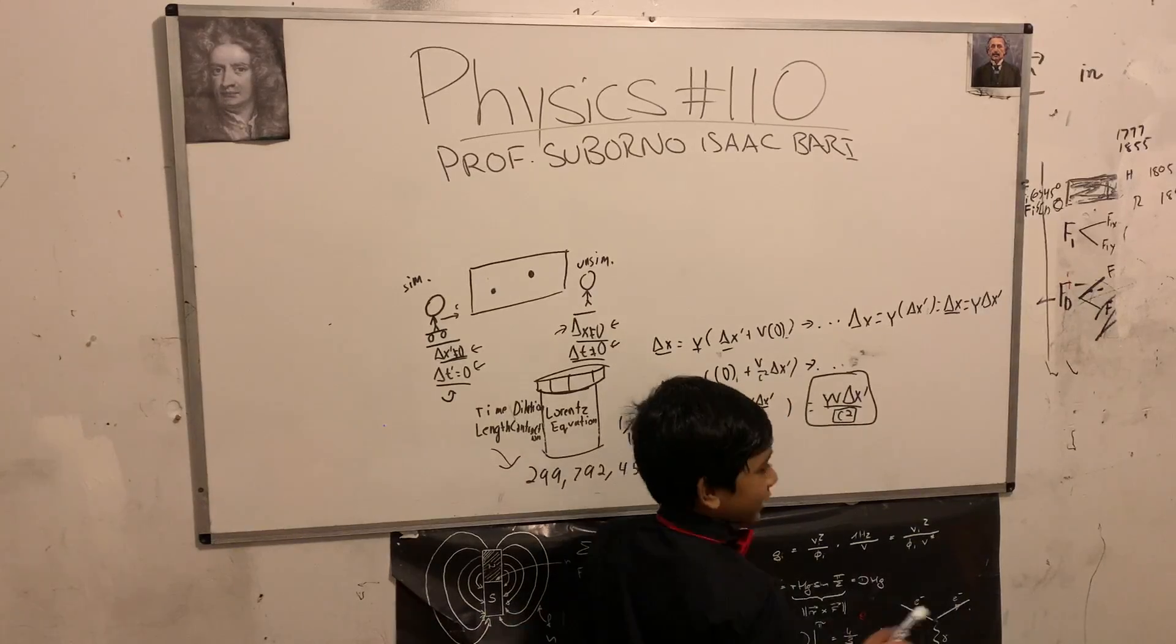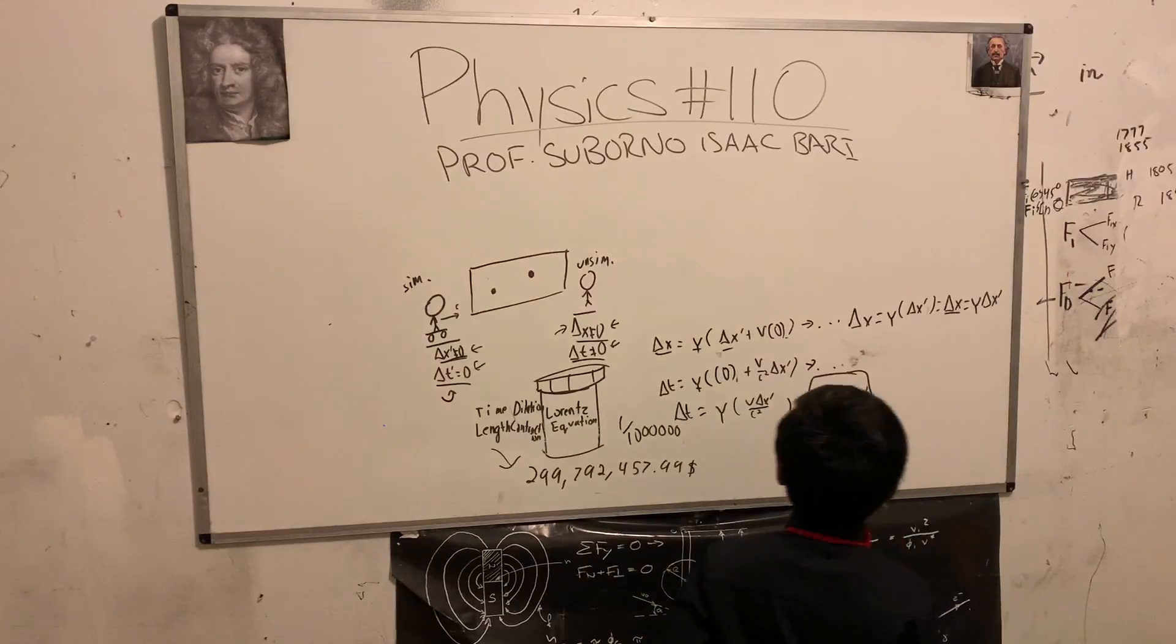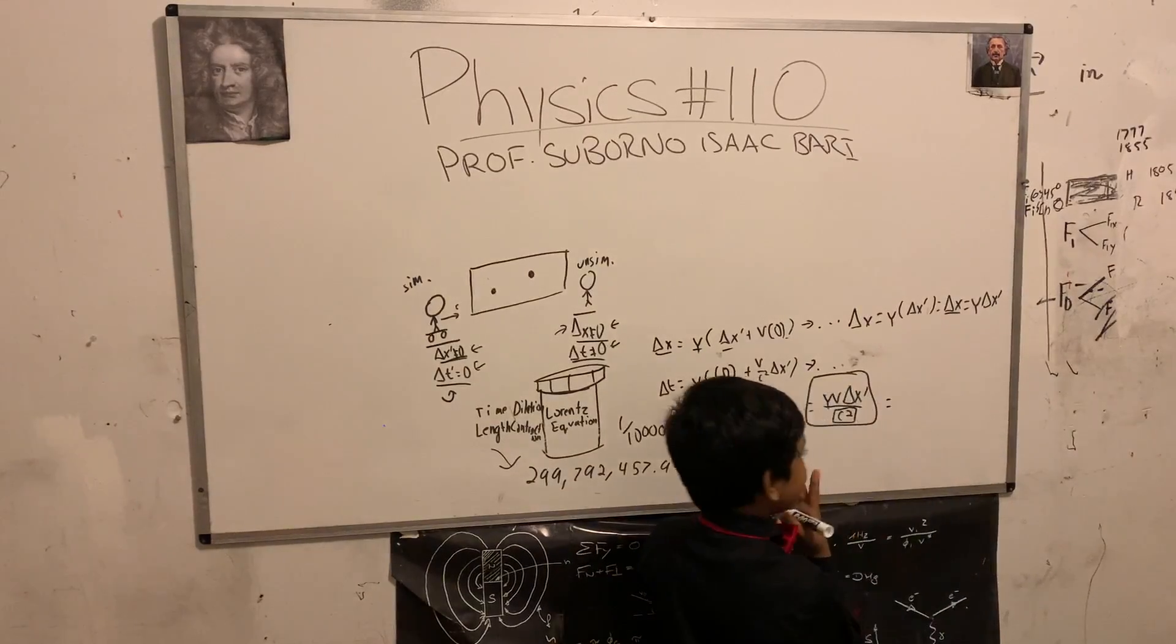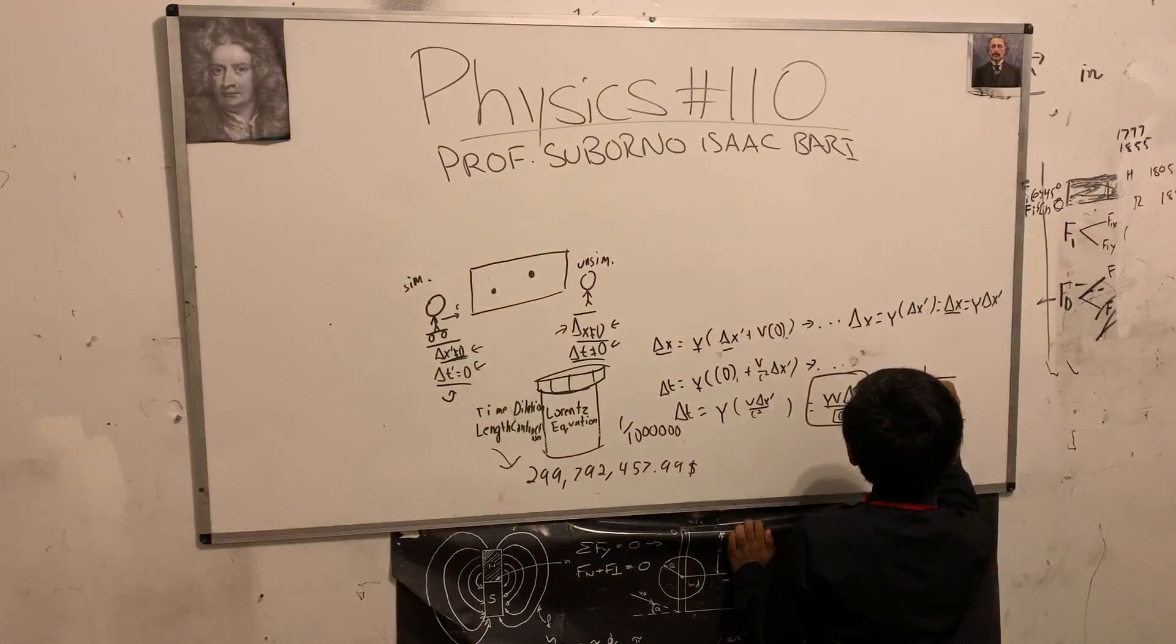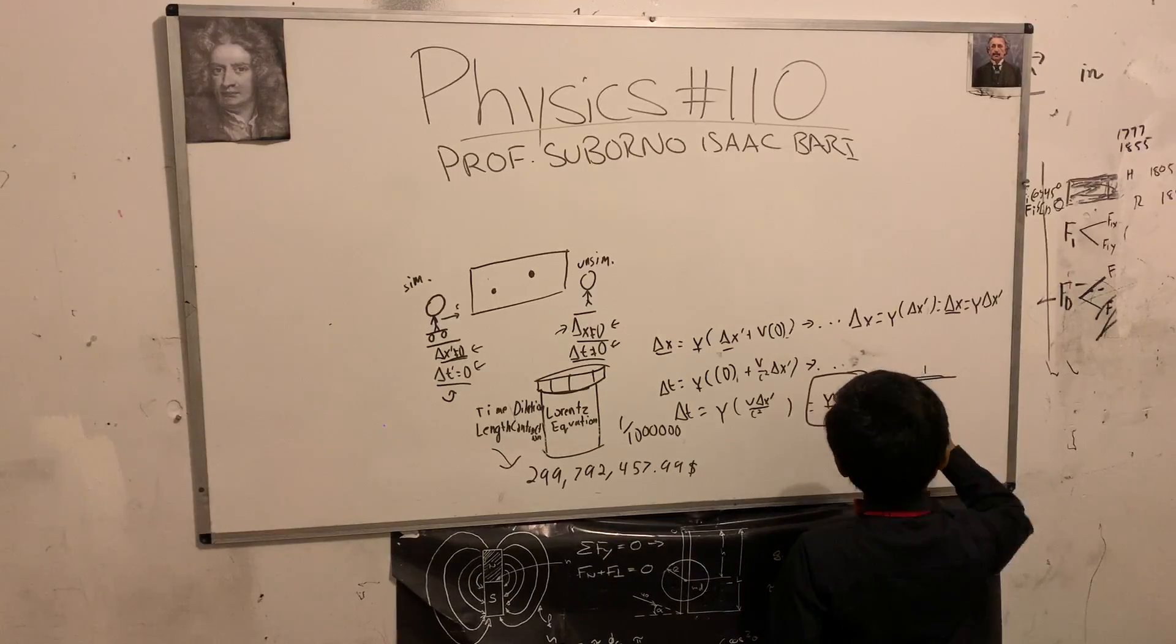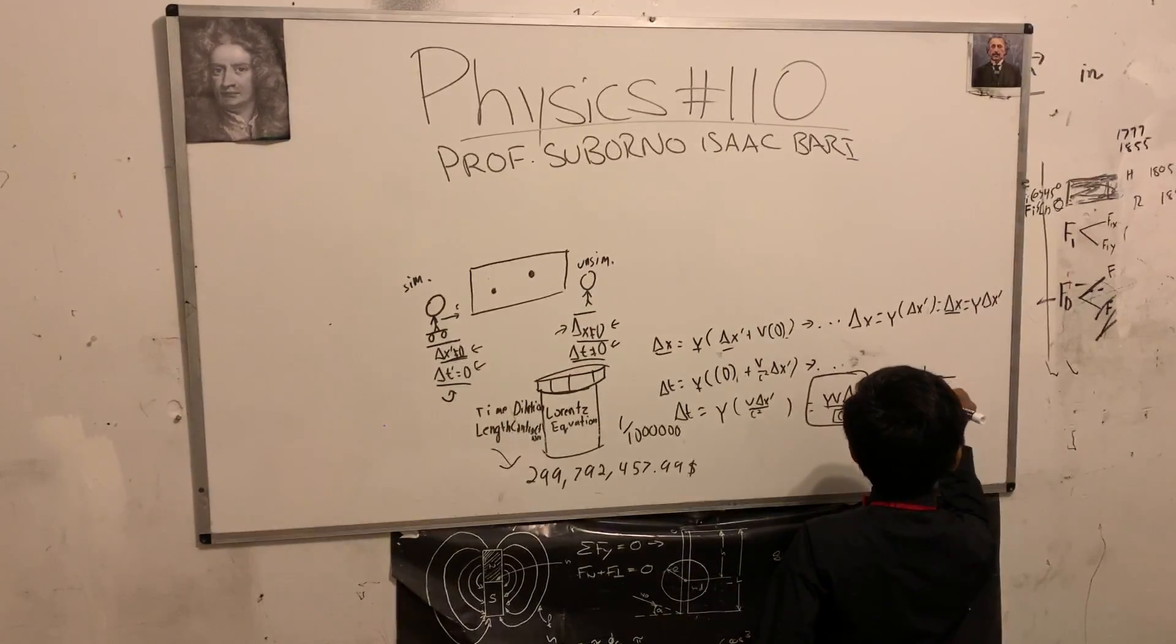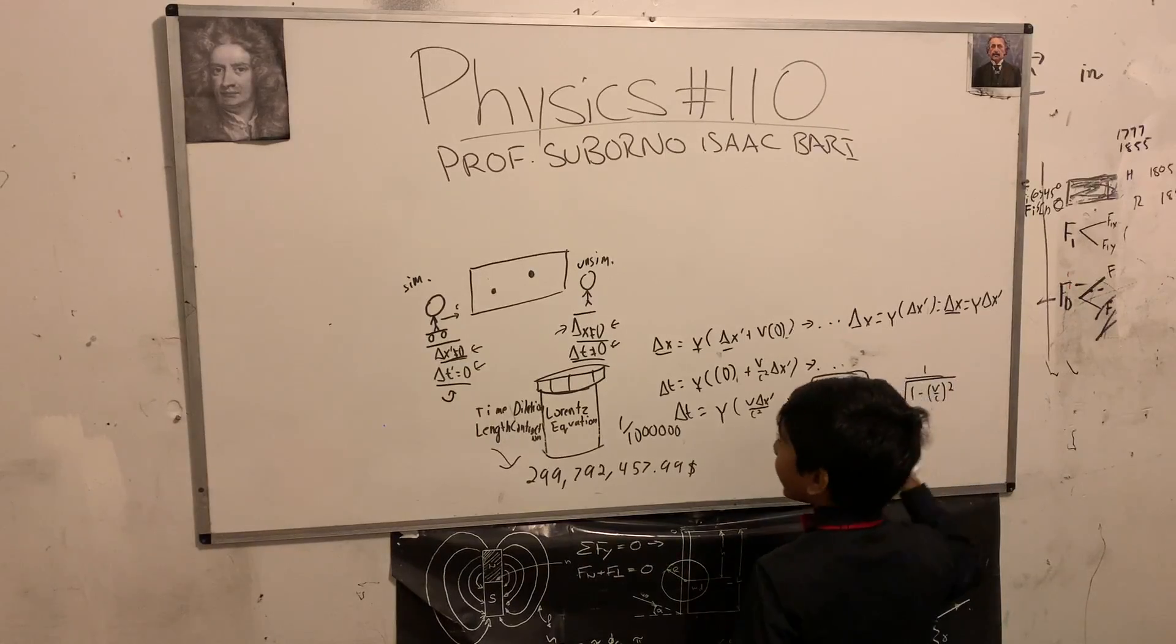Now anyways, after you bought this we can continue on with the lecture. So about that, we can expand gamma into this horrifying monstrosity: one over square root of one minus v squared over c squared.